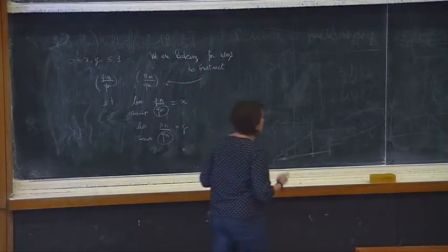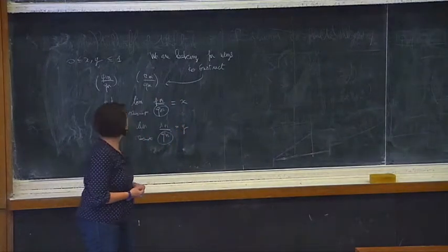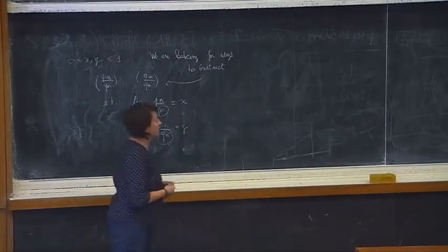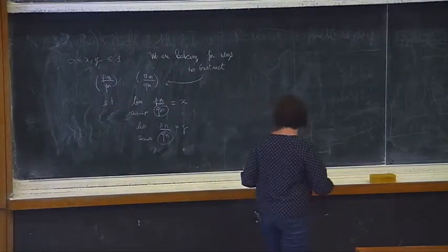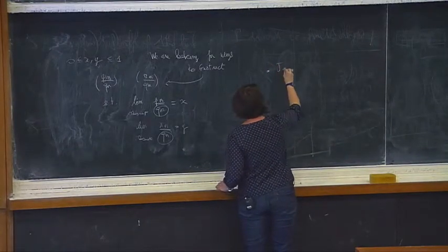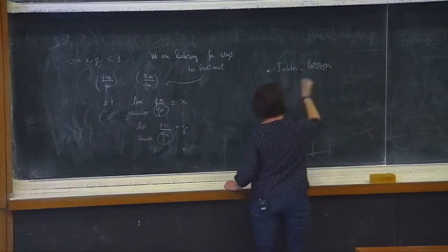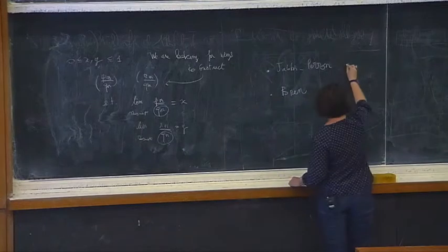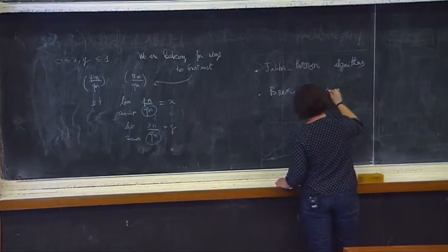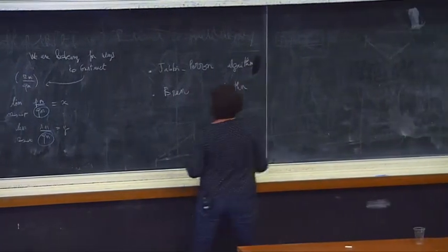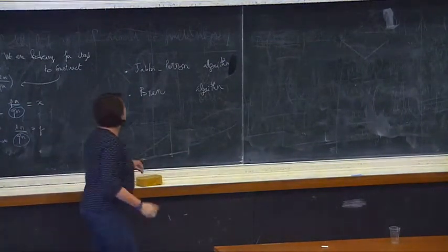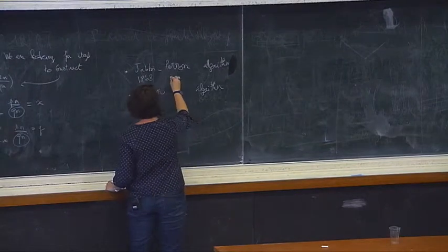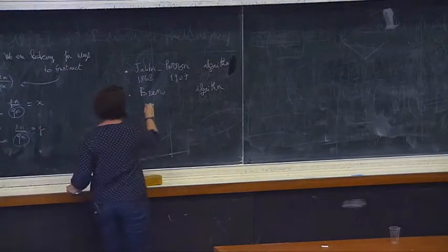We will focus on very particular methods of matricial nature, which correspond to change of basis in the lattice. We will extend the Gauss transformation in a unimodular framework. In this lecture I will mention the Jacobi-Perron algorithm and the Brun algorithm. The Jacobi-Perron algorithm was introduced first by Jacobi in 1868, then by Perron in 1907, and Brun dates back to 1957.